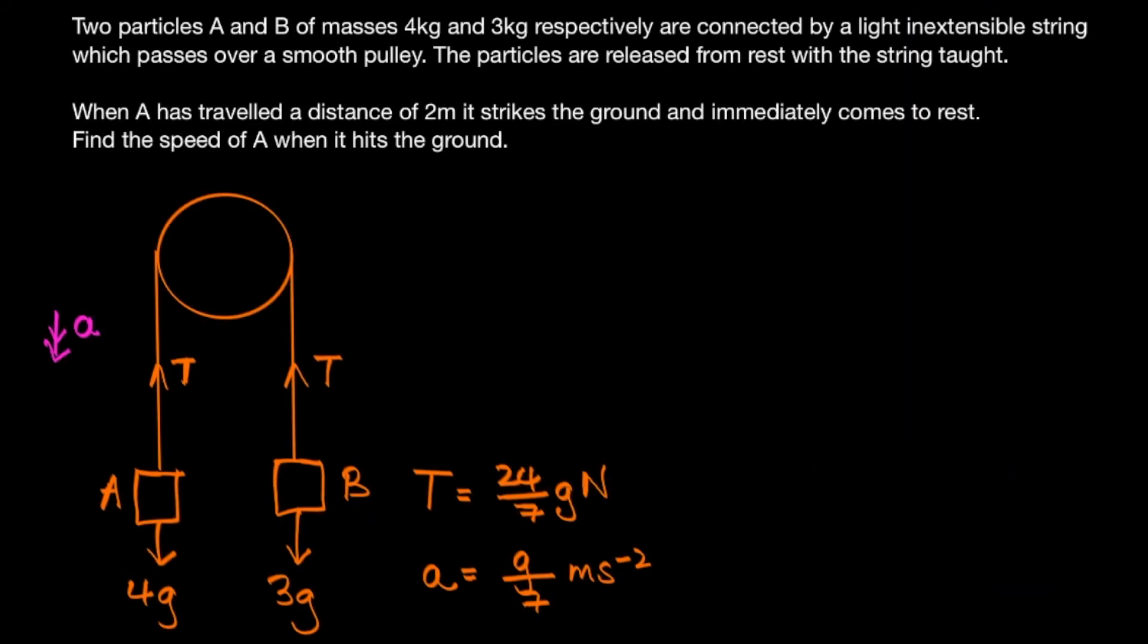Here we have the second part of the question. When A has traveled a distance of two meters, it strikes the ground and immediately comes to rest. Find the speed of A when it strikes the ground.